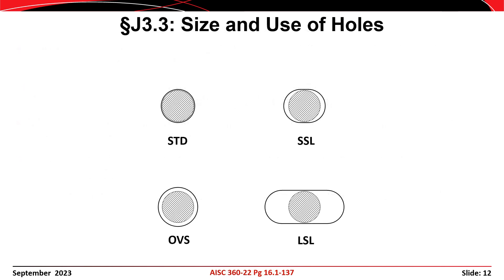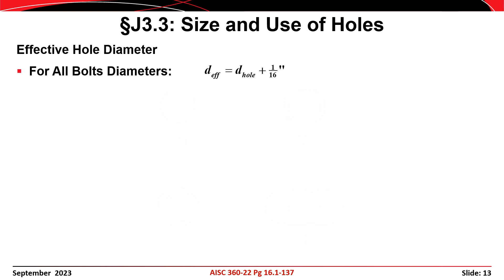Standard holes (STD) provide a minimum amount of fit-up tolerance around the bolts. Oversized holes (OVS) provide additional tolerance in both directions, whereas short slots (SSL) and long slots (LSL) provide additional fit-up tolerance in only one direction. Regardless of what type of hole is used, the effective diameter of the hole is equal to the actual diameter of the hole plus 1/16 of an inch.